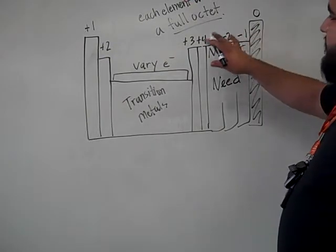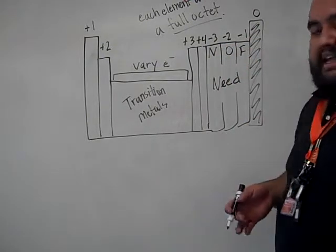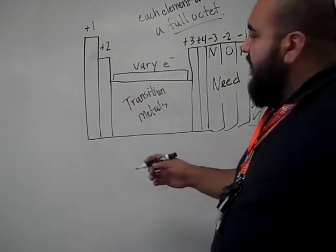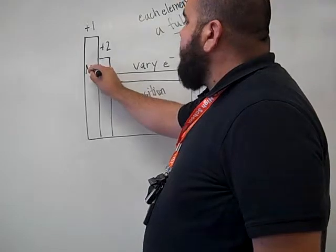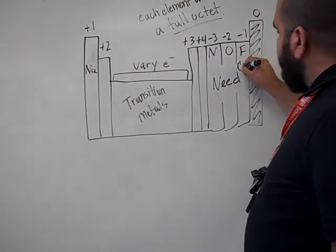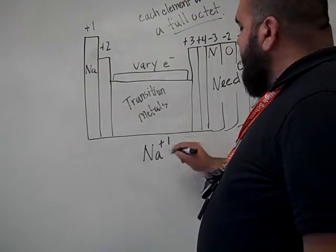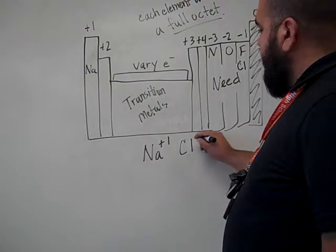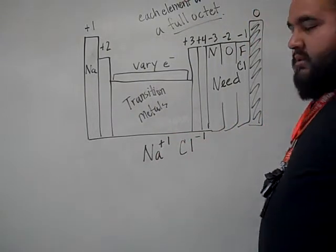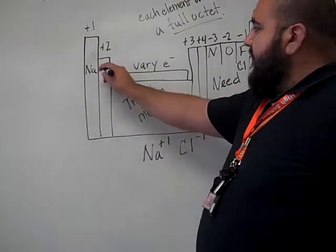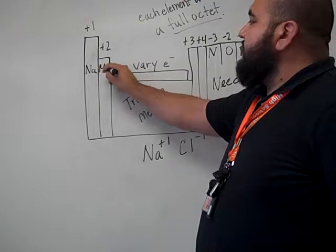So when we are talking about oxidation states or when you're naming compounds, you're going to use these values. This is the reason why sodium, which is over here, and chlorine, which is down here, bond because sodium has 1 electron to give and chlorine needs 1 electron. Does that make sense?